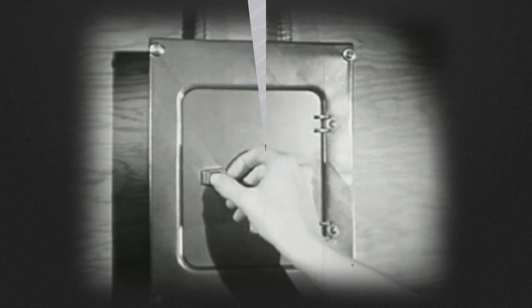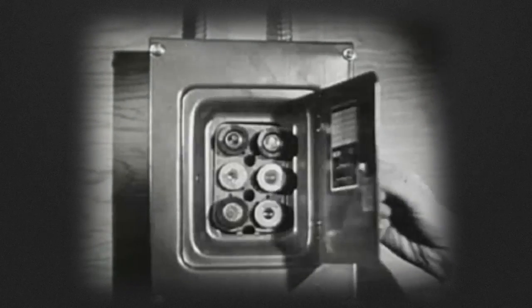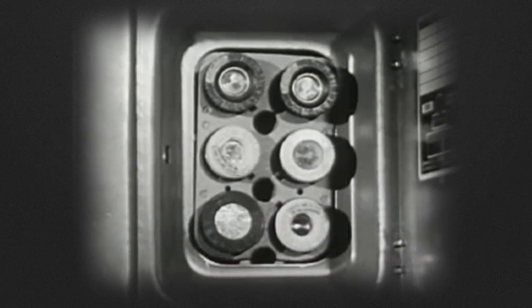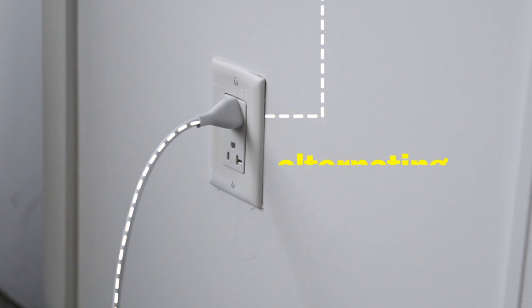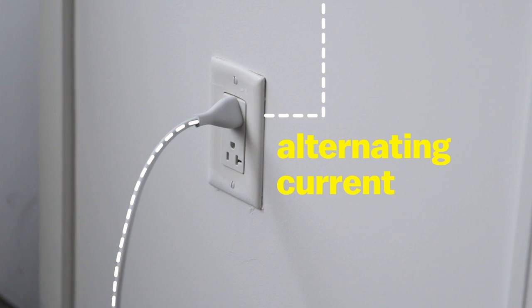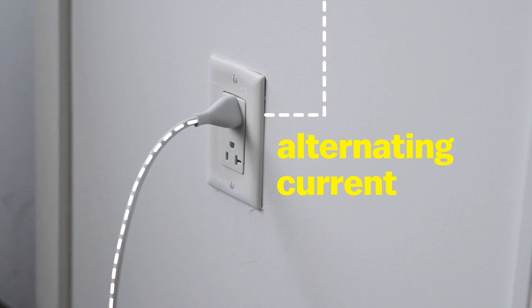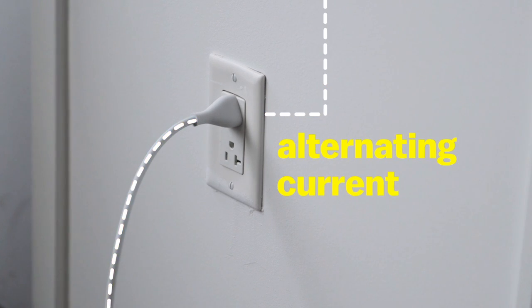So Audrey, what's the deal? Yeah, the first thing you have to understand is that the kind of power that comes out of your wall is actually different than the kind of power your electronics want. It comes out in the form of alternating current electricity. That means the electrons are pulsing back and forth.